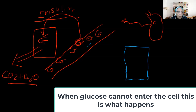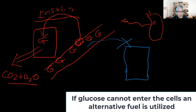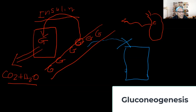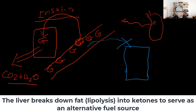The glucose wants to enter the cell, but it cannot because there is no insulin to passively transport it. So the cell is going to look for other sources of energy — and looking for other sources of energy is what is called gluconeogenesis. 'Neo' meaning new, 'genesis' meaning origin. The body then turns to amino acids to maintain metabolic activity.